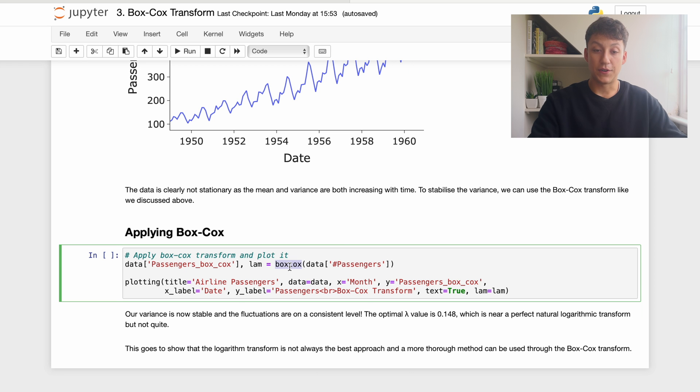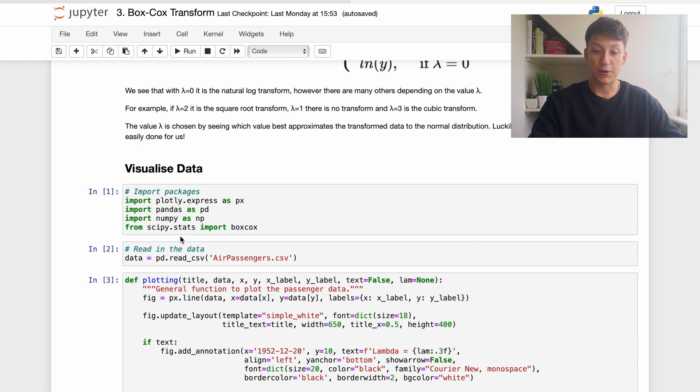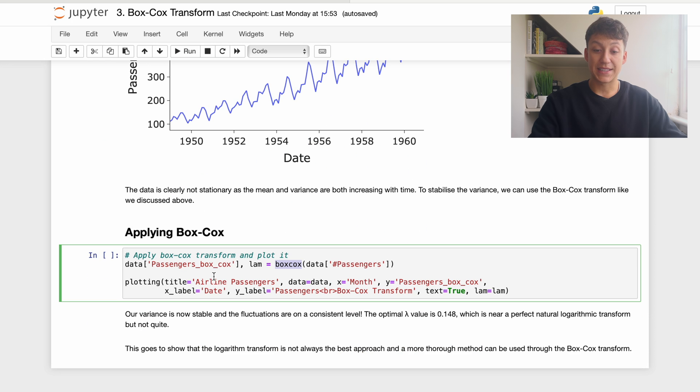So using the Box-Cox transform is very easy. We get the boxcox function from scipy.stats and we simply just apply it to our time series. So in this case that time series is data—our data frame is data and our series name is passengers. We apply that transformation and the result is going to be a Box-Cox transform which best fits that data and the lambda value that's best fitted that data. So you get two outputs: the lambda value which it computes automatically for us, and also the transformed time series.